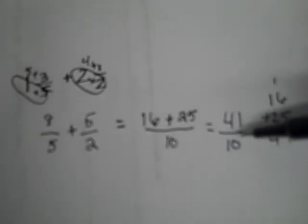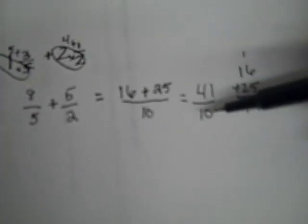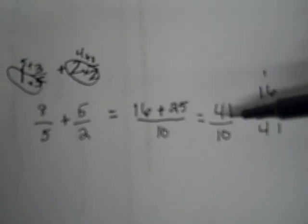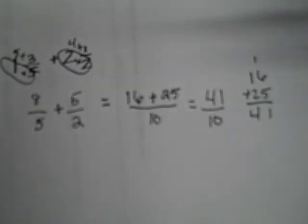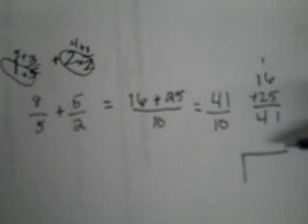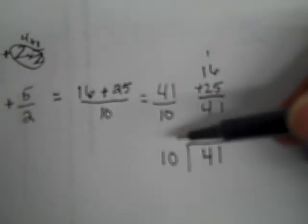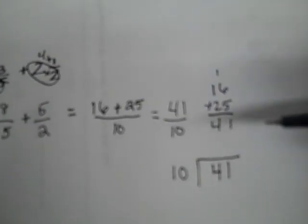Now I can't pull out a common factor out of 41 and 10 other than 1, but now I'm going to check to see if I can change this into a mixed number. It takes 10 pieces to make a whole and I have 41 tenths. So I definitely have enough to make at least a whole. So I will put the 41 on the inside and the 10 on the outside and divide 41 by 10.